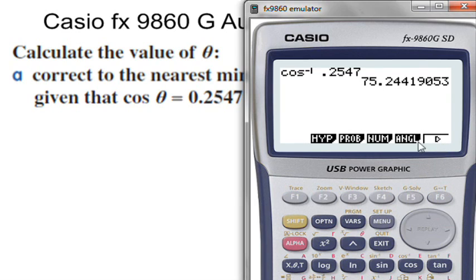So I'll go to option and angle and F6 I've got DMS for degrees, minutes and seconds. So if I press that it's going to work out the answer converted into degrees, minutes and seconds.